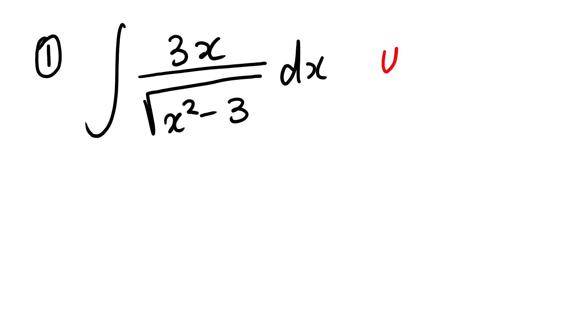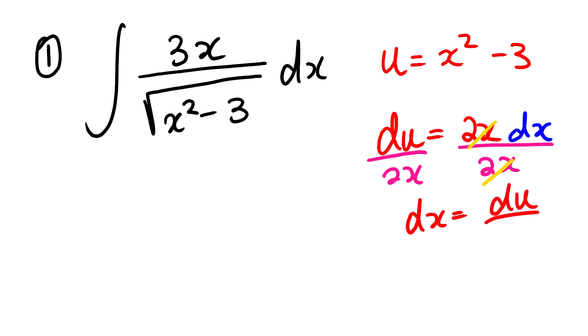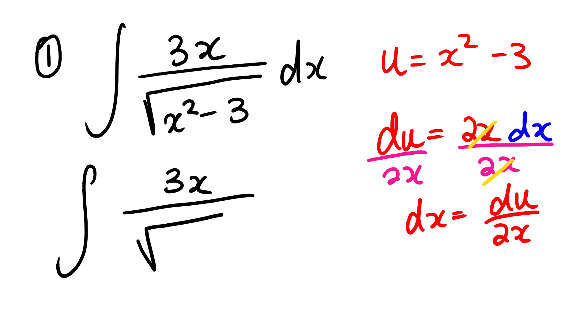So we are going to let u equal to x squared minus 3. Now since u equals x squared minus 3, we are going to find the derivative of this, which will be 2x dx. Then solving for dx, we are going to divide both sides by 2x, so dx equals du over 2x. We go back to our function — remember we said this part equals u — so we put u, and where we see dx we substitute by du over 2x.